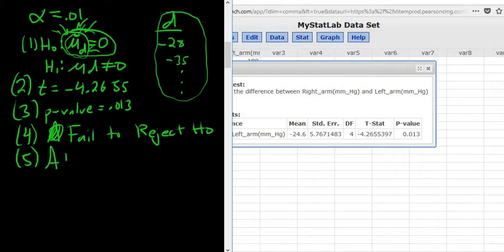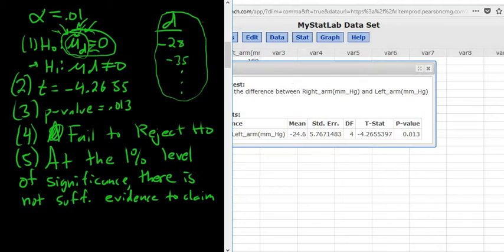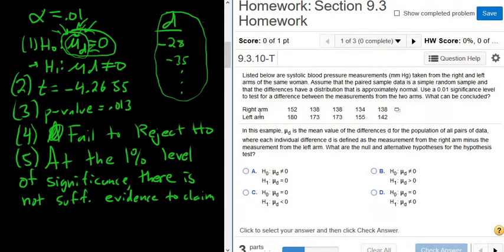And then step five, we would do our interpretation. We would start by saying at the 1% level of significance, just like before. Always start by mentioning the significance level. Whenever you reject the null hypothesis, there is sufficient evidence for H1. When you fail to reject, there is not. So there is not sufficient evidence to claim that there is a difference. Let me go back to the question and see what wording they used for this part. To test for a difference between the measurements from the two arms. So I'll say to claim that there is a difference.